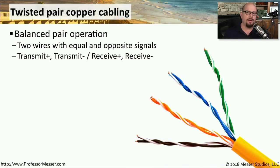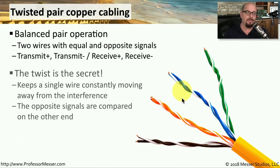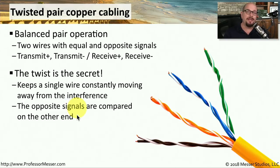Most of our ethernet networking operates using twisted pair wiring. This twisted pair copper cabling uses something called balanced pair operation. That means there are two wires that interact with each other — both sending the same information, one as a positive value and one as a negative value. As we're communicating through the network, we're twisting these wires amongst each other. Because these wires are twisted, there will always be a wire moving away from any potential interference, and when the information gets to the other end, those opposite signals can be compared to reconstruct anything corrupted by interference.